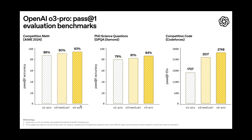As you can see, the O3 Pro model scored 90% whereas O1 Pro scored only 86% in math. In science, O3 Pro again outperforms at 84%, compared to 81% for O3 Medium and 79% for O1 Pro. In coding, O3 Pro reaches an ELO of around 2748, O3 Medium trails by just 200 at 2517, while O1 Pro is just 1707 ELO — an exceptional difference in the coding space.